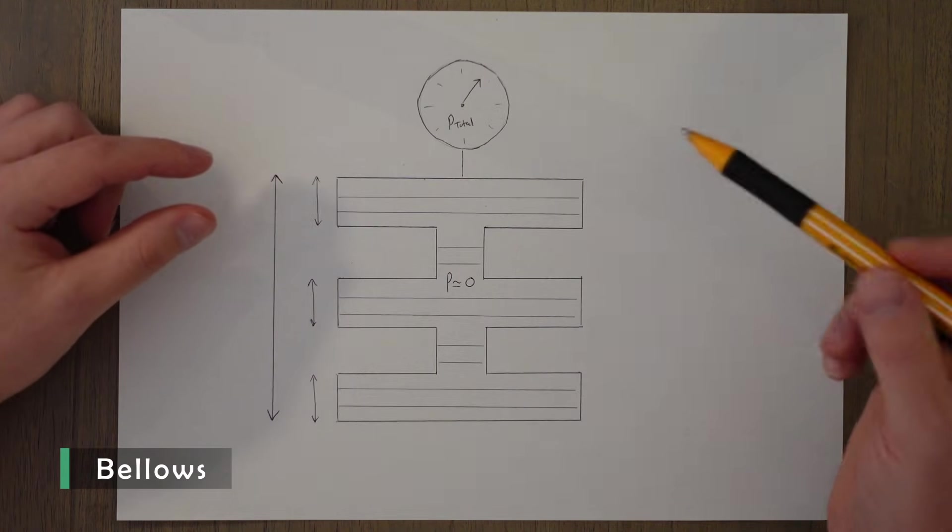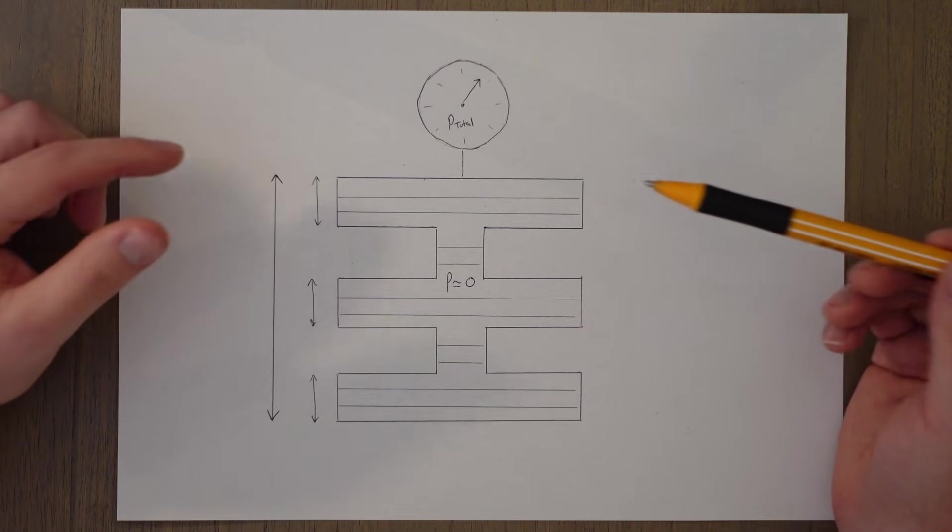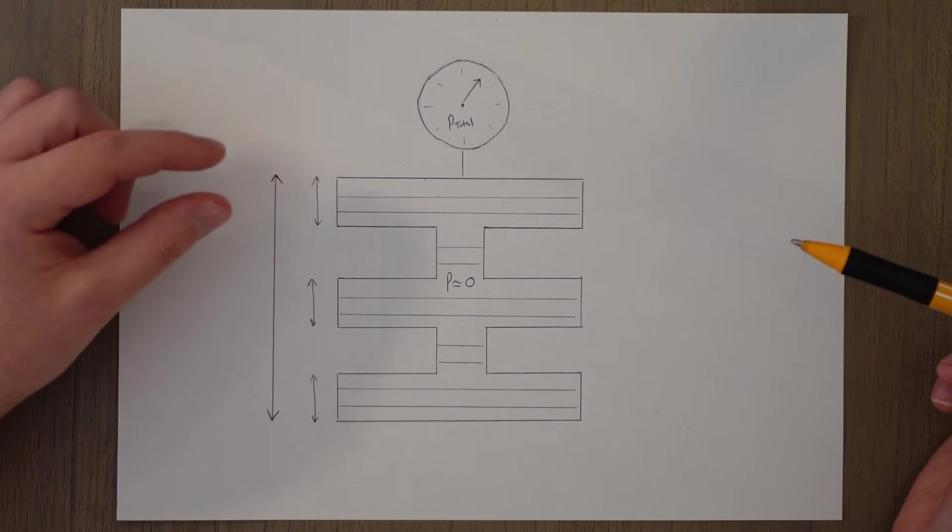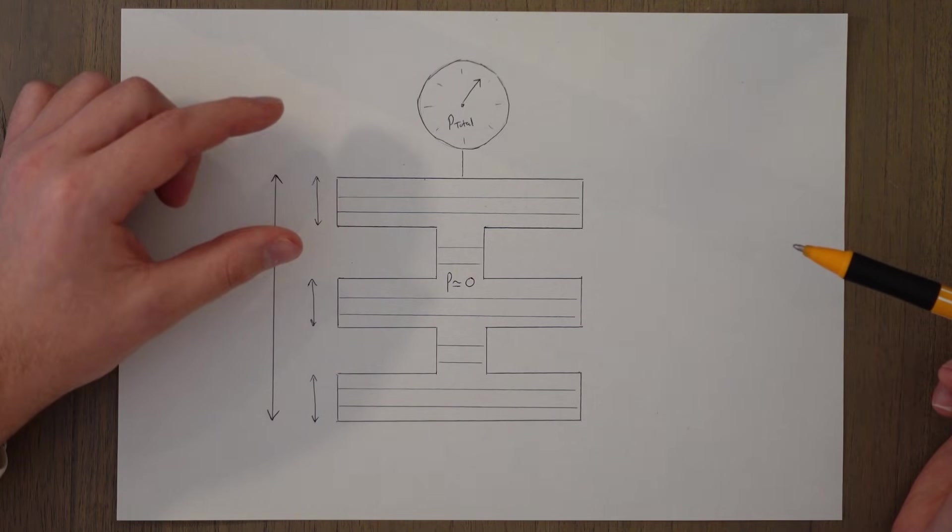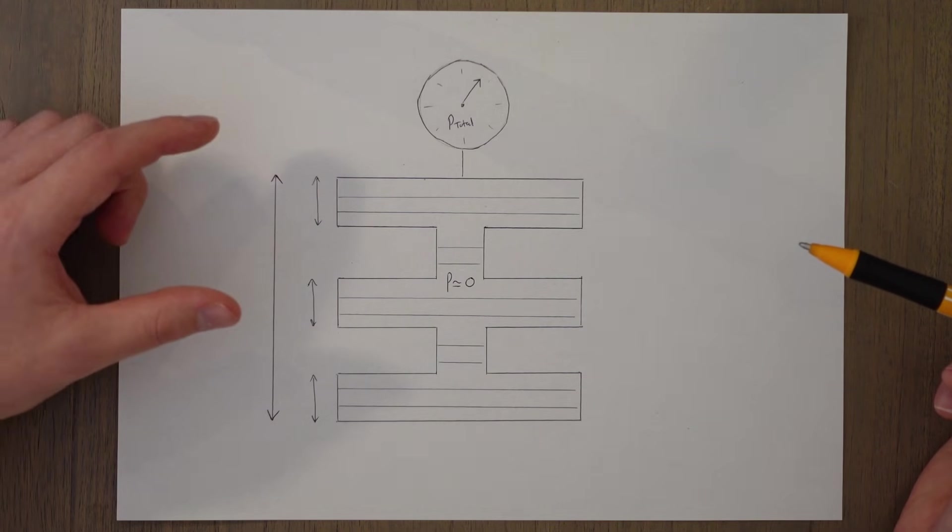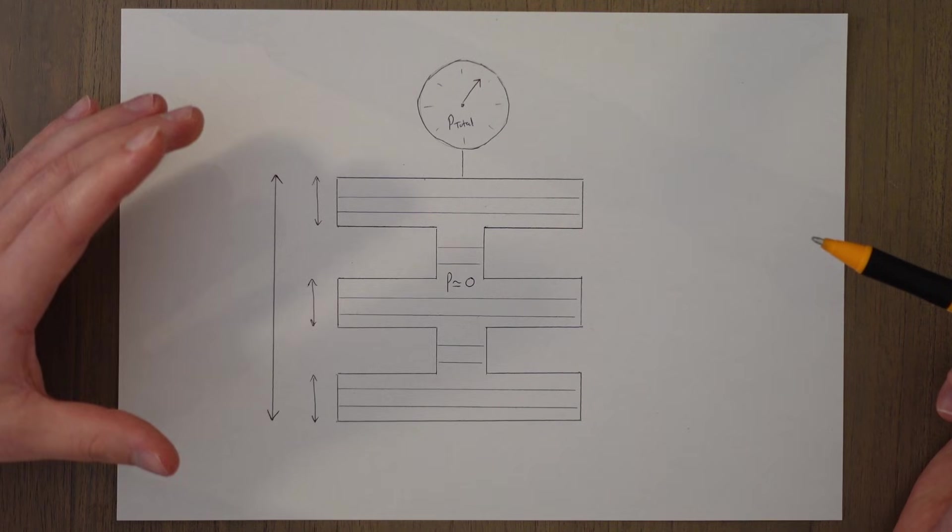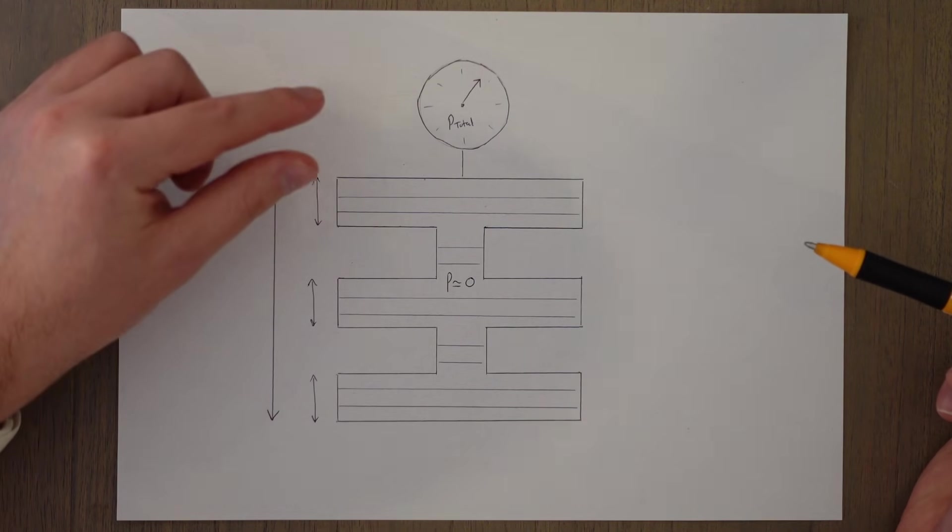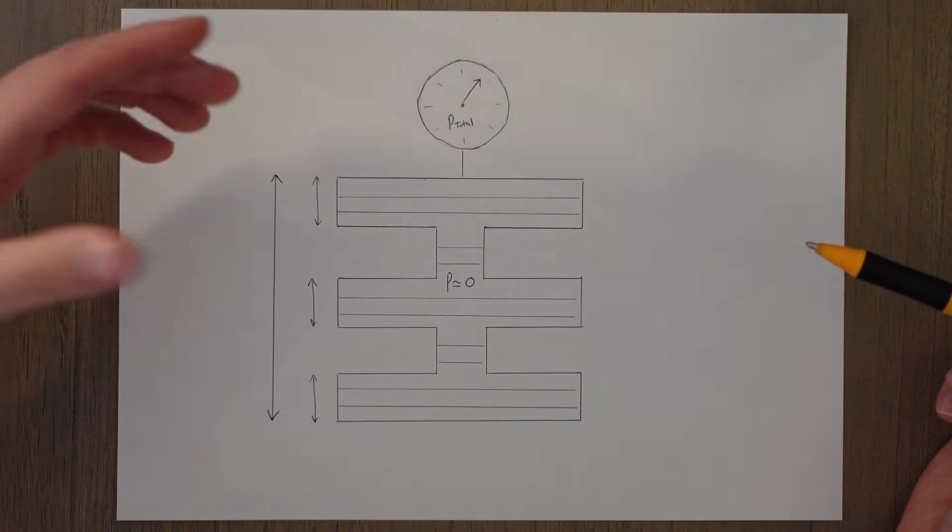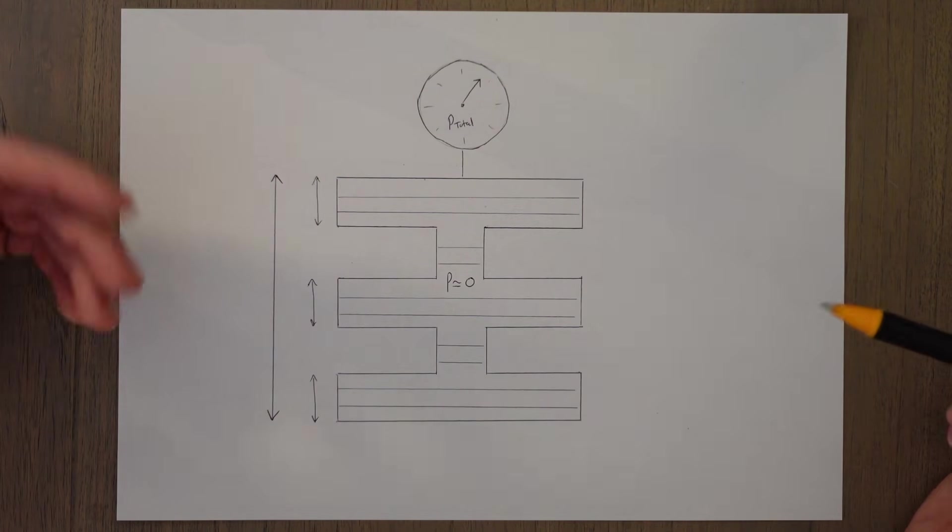Bellows are just stacks of aneroid capsules joined together. The purpose of joining them together is that each capsule is inflating and deflating according to the pressure a small amount. Therefore, when we stack them together, we stack the total movement of those capsules together. Therefore, it's much easier to measure small and precise pressure changes, and we can measure larger total pressures in general.